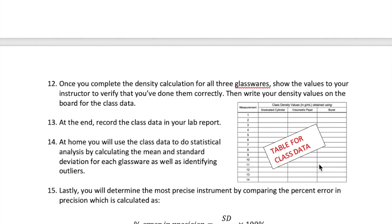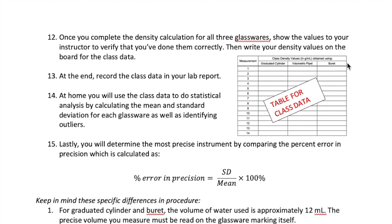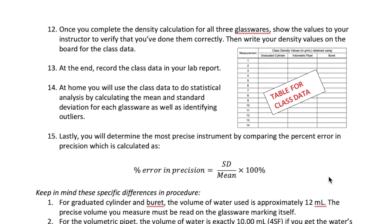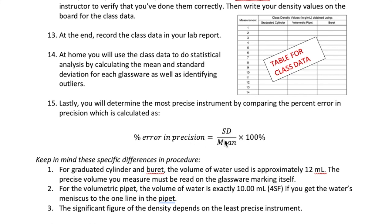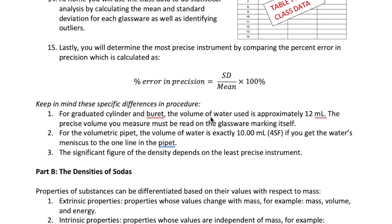Once all groups complete the class table on the board, each student copies the results into their own lab report. The purpose of this class data is for you to later calculate the mean and standard deviation for each of the glasswares — remember you learned how to do this in your Excel experiment. You'll compare the precision of the three glasswares by calculating the percent error in precision: take the standard deviation for each instrument and divide by the mean. The larger the percent error, the less precise the instrument. For both the graduated cylinder and the burette, use approximately 12 milliliters of water; for the volumetric pipette, use 10.00 milliliters. Pay close attention to significant figures — it's a major part of your grade.